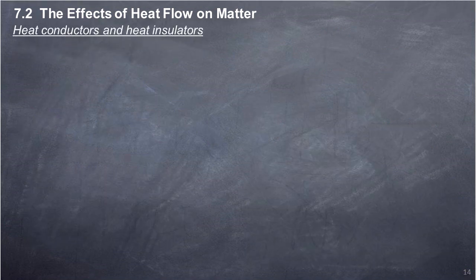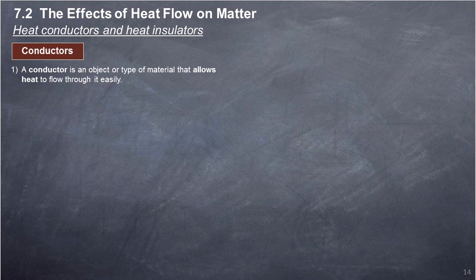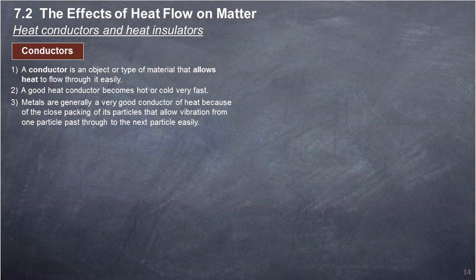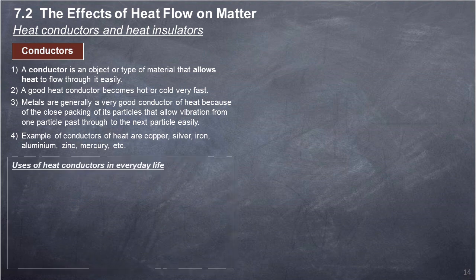Heat conductors and heat insulators. A conductor is an object or type of material that allows heat to flow through it easily. A good heat conductor becomes hot or cold very fast. Metals are generally very good conductors of heat, because of the close packing of their particles that allows vibration to pass from one particle to the next easily. Examples of conductors of heat: copper, silver, iron, aluminium, zinc, mercury, etc. Uses of heat conductors in everyday life: cooking utensils made from steel or aluminium for faster heat transfer to foods; soldering iron made from copper for rapidly achieving maximum heat transfer; electrical appliances made from steel, aluminium, or iron for good heat transfer to foods.